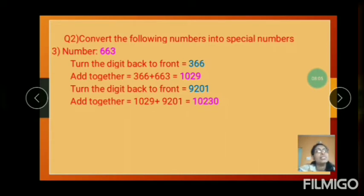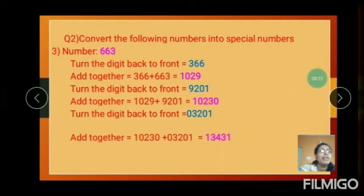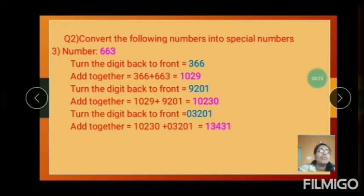You can do many of these. Again turn the digit back to front for 10230: the reversed digits are 0, 3, 2, 0, 1 — the number is 3201. Add together: 10230 plus 3201 equals 13431.